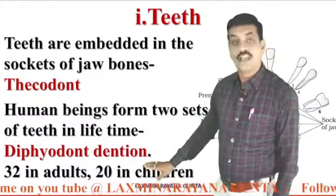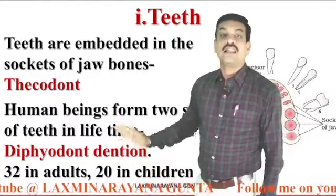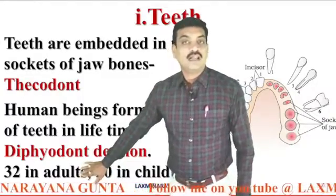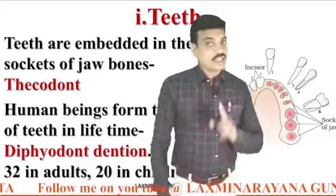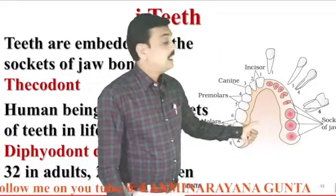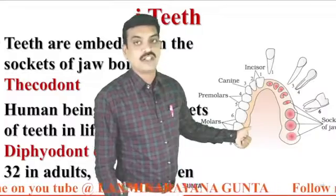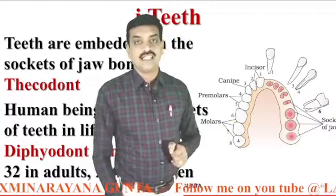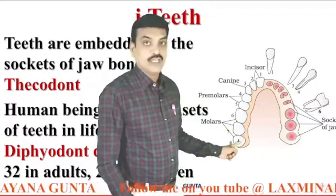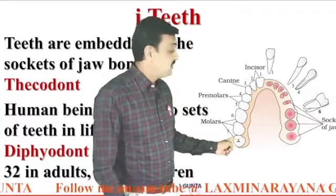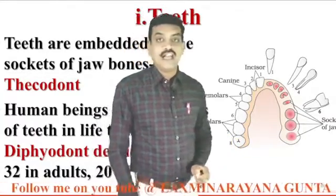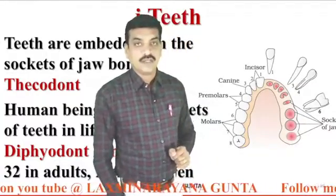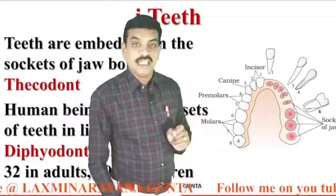After the age of 12 years, these milk teeth are replaced by permanent teeth, and these permanent teeth are 32 in number, present in adults. Human adults have 32 teeth, whereas 10th class students have only 28 teeth, because the last tooth is called the wisdom tooth, which arises at around the age of 21 years. That's why you have only 28 teeth.